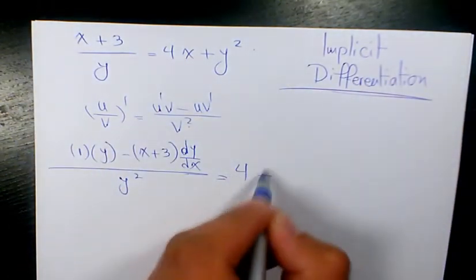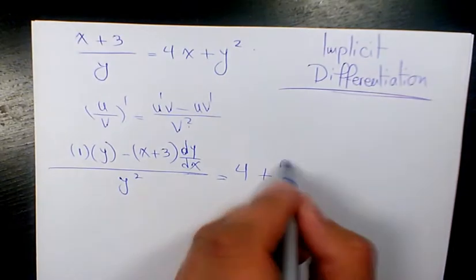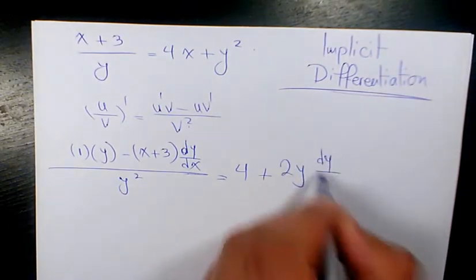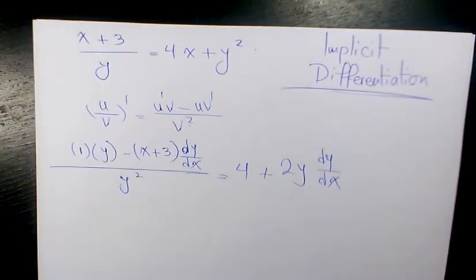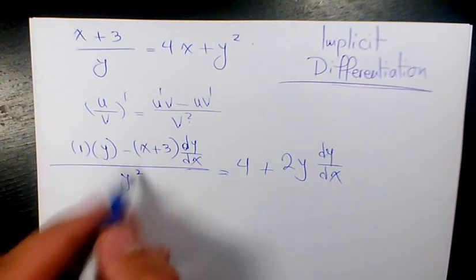Which is 4. Derivative of y^2 is going to be 2y dy/dx. Then you separate them...